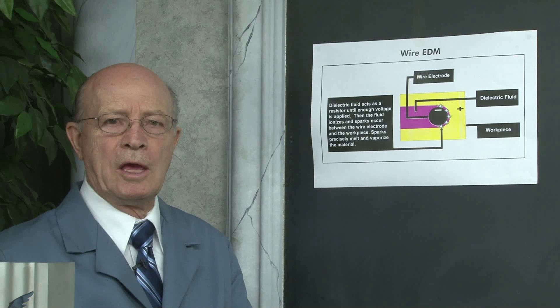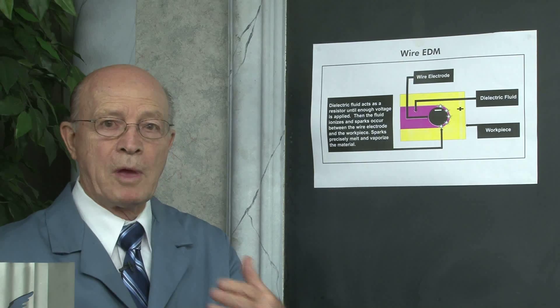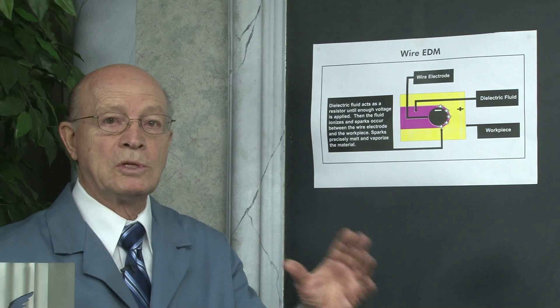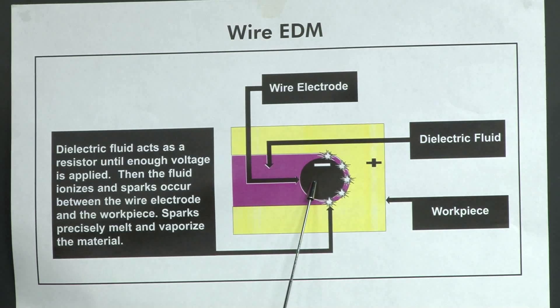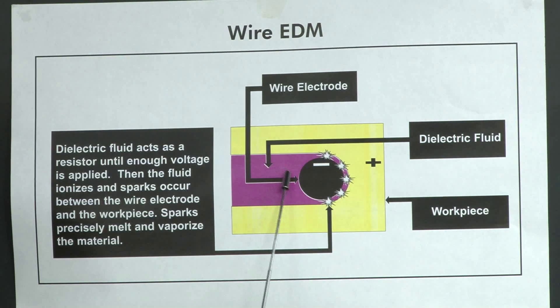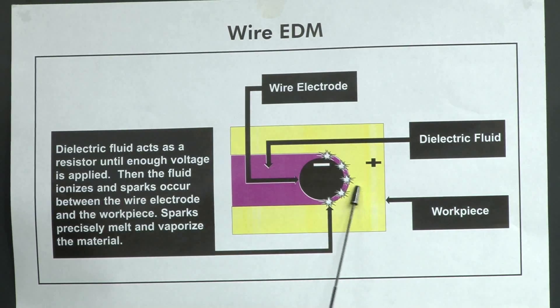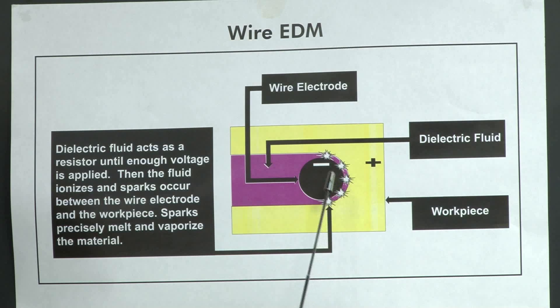I'd like to explain the wire EDM diagram that we have over here. This is the wire electrode. And this is the dielectric fluid, which is basically the ionized water. And this is the workpiece. Dielectric fluid acts as a resistor until enough voltage is applied. Then the fluid ionizes and sparks occur between the wire electrode and the workpiece. Sparks precisely melt and vaporize the material. There's always a gap between the wire electrode and the workpiece. The wire never touches the workpiece. And so there's stress-free machining with wire EDM.